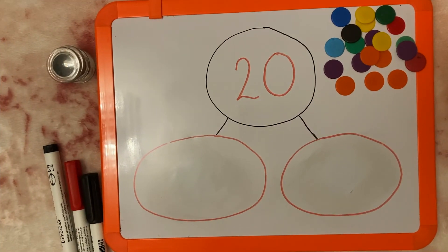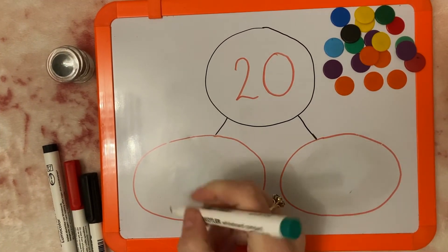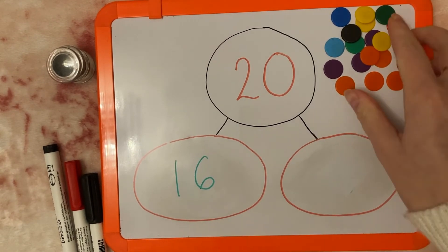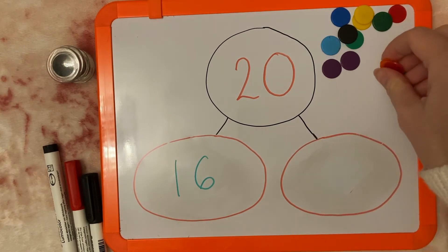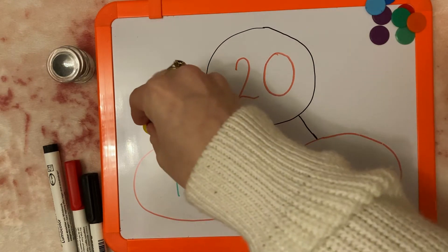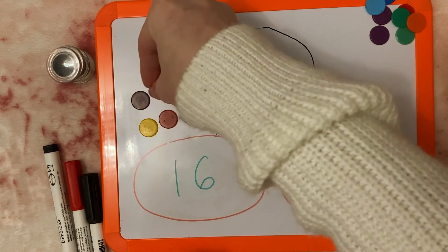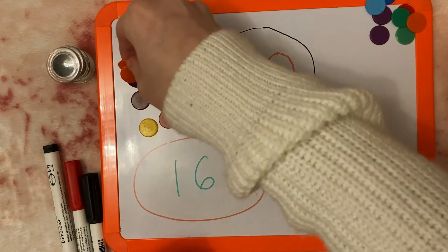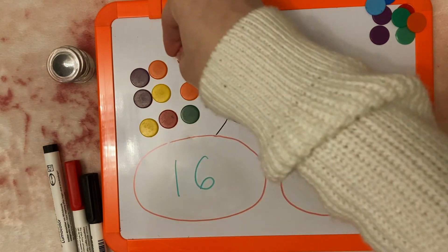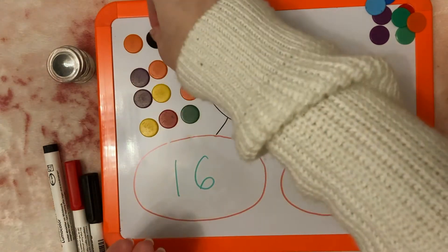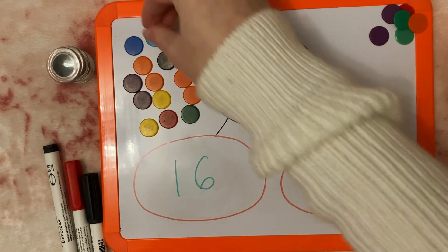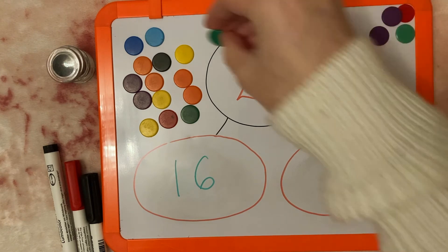Okay. If I put 16 here, so I'll get my counters again and I'll count 16. 1, 2, 3, 4, 5, 6, 7, 8, 9, 10, 11, 12, 13, 14, 15, 16.